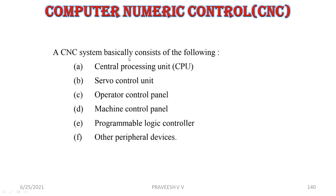The main parts of a CNC system include a central processing unit, a servo control unit, an operator control panel, a machine control panel, a programmable logic controller, and other peripheral devices.